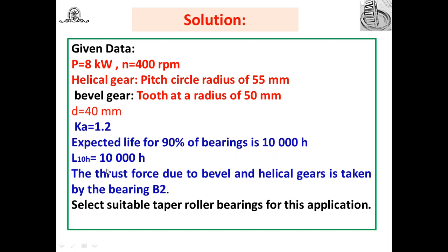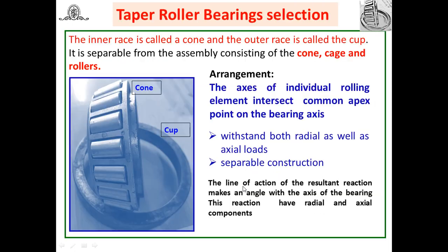Before proceeding, we should know the construction of a taper roller bearing. The inner race is called the cone; it consists of the cone, cage, and rollers. The outer race is called the cup. The rollers are inclined at an angle to the bearing axis, which is why this bearing can withstand both radial and axial loads. The construction is separable, and the line of action of the resultant reaction makes an angle with the bearing axis, giving radial as well as axial components.